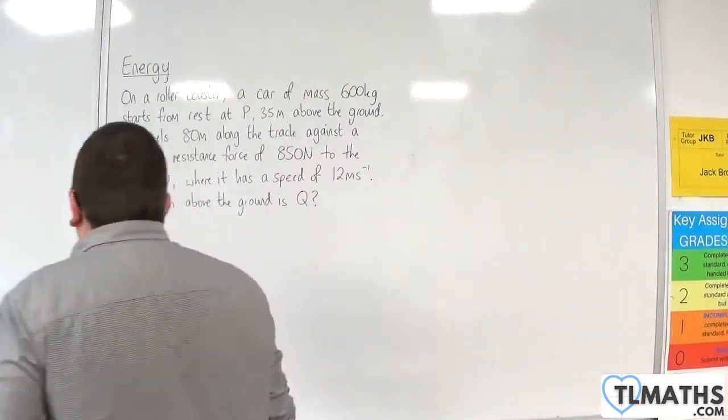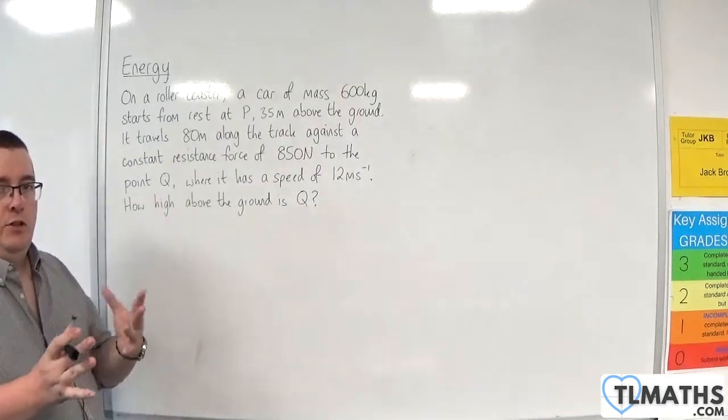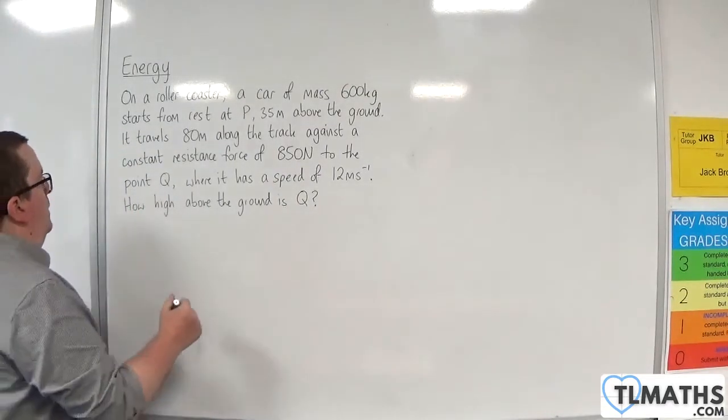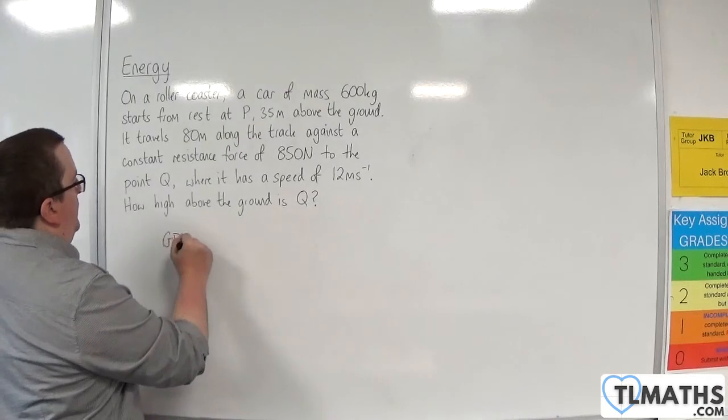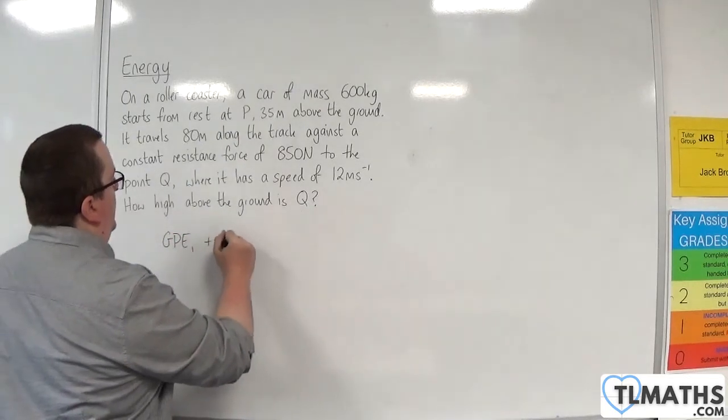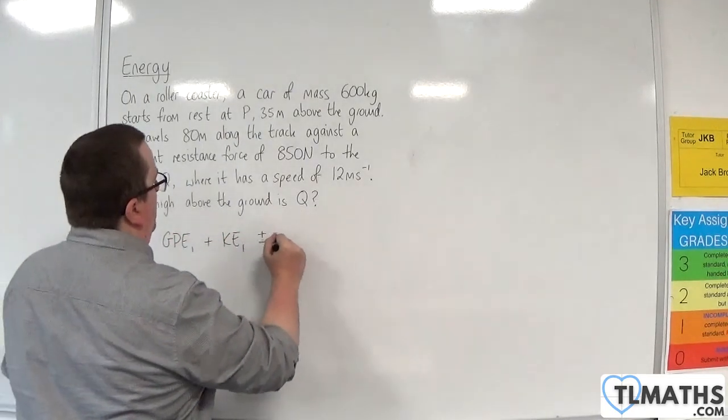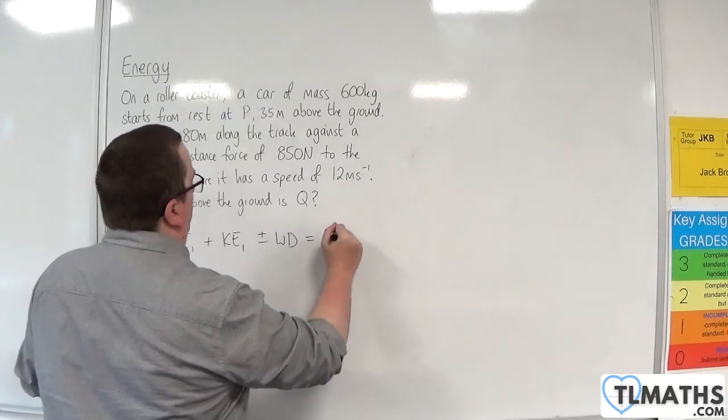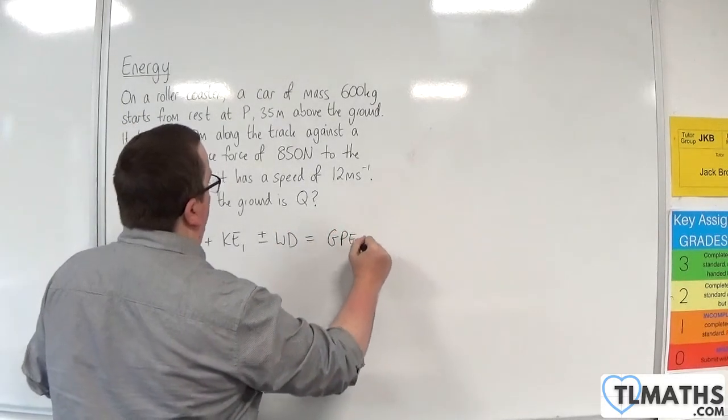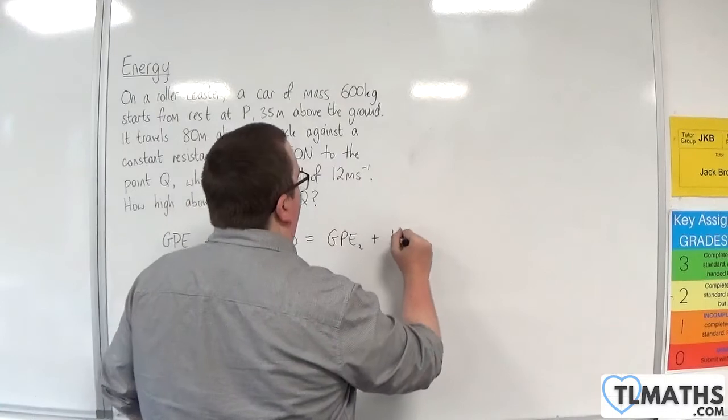Okay, so for this, we can go straight in to the work energy principle. So the initial gravitational potential energy plus the initial kinetic energy plus or minus the work done is equal to the final gravitational potential energy plus the final kinetic energy.